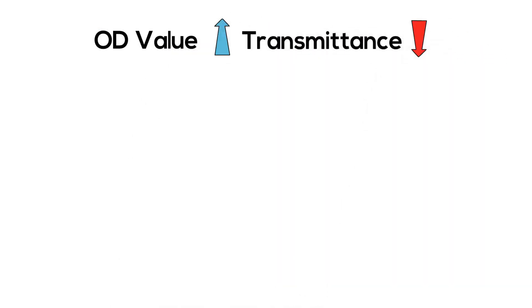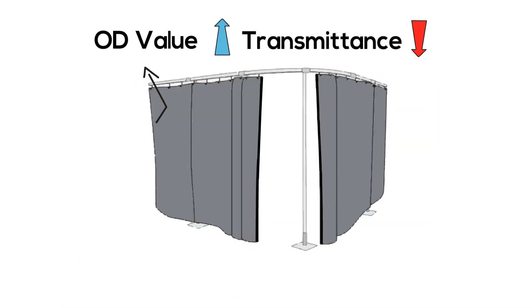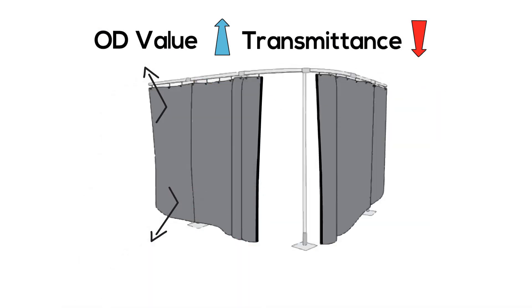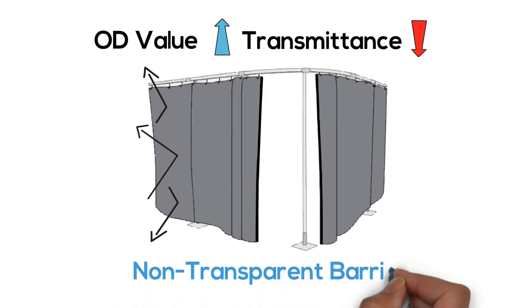In an extreme example, if you were to block all visible light wavelengths — blocking any theoretical visible light laser — no visible light would pass through, and therefore it's no longer possible to have any transparency that our window or glasses product provide. Instead, a non-transparent barrier or curtain would be a better option.